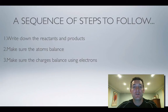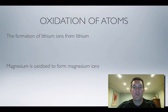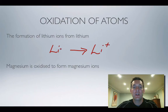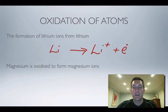Let's look at some examples, starting with the oxidation of atoms. For lithium: lithium has no charge as an element, but we're forming lithium ions as a product. The number of atoms balances — one on each side — but we have a positive charge on the product side, so we add one electron to that side to balance the charge.